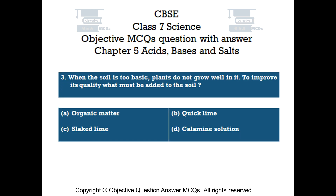Question number 3. When the soil is too basic, plants do not grow well in it. To improve its quality, what must be added to the soil? Option A, organic matter. Option B, quick lime. Option C, slaked lime. Option D, calamine solution.